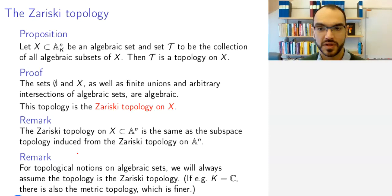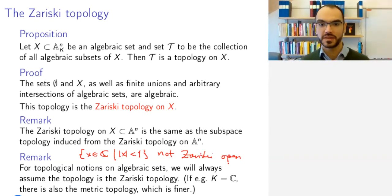The open ball, so the set of all x in C such that the absolute value of x is smaller than one, this is of course open with respect to the usual topology on C, but this is not Zariski open. There is no polynomial that vanishes on its complement, so its complement is not Zariski closed, and therefore this is not Zariski open. One has to be careful when dealing with intuitive notions and working with the Zariski topology. To say more about these things, we need to introduce some more terminology.